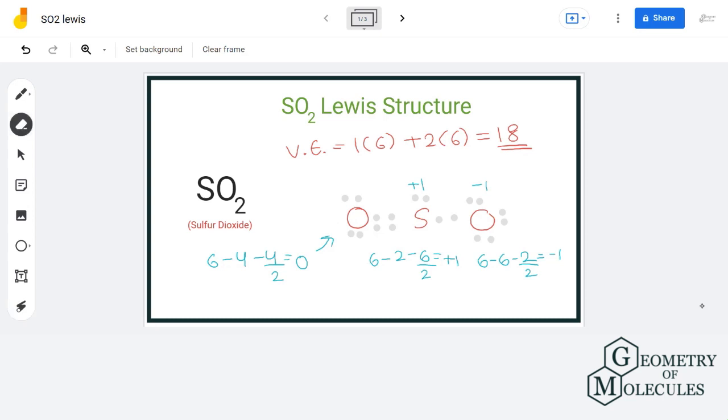So to avoid that, what we will do is we will shift electrons from oxygen here to in between sulfur and oxygen. Now that will result in formation of a double bond, and now if we calculate the formal charge it will be zero for all the atoms present.